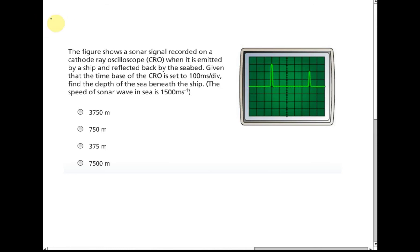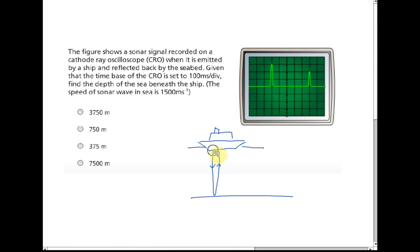The setup is: the ship is on the water surface, and the seabed is below. The ship sends the sonar signal downward and it reflects back. The detector is right next to the emitter, so it detects the outgoing signal immediately as the first pulse. The signal then travels down to the seabed and reflects back. The second pulse has lower amplitude because energy is lost during the round trip. The time taken for the signal to go down and come back spans five divisions, each division being 100 milliseconds.